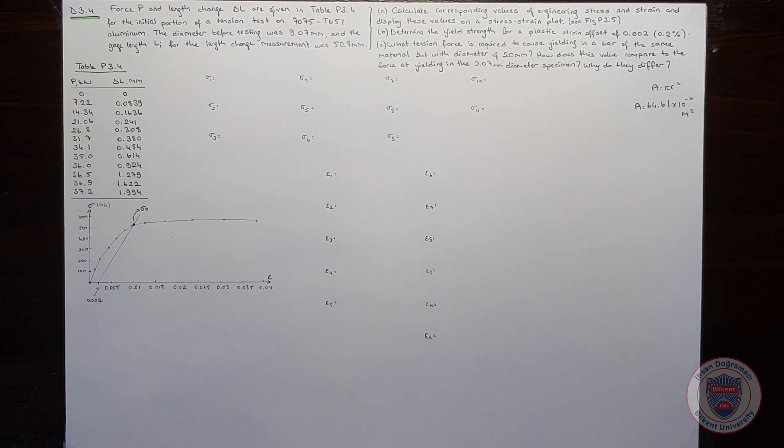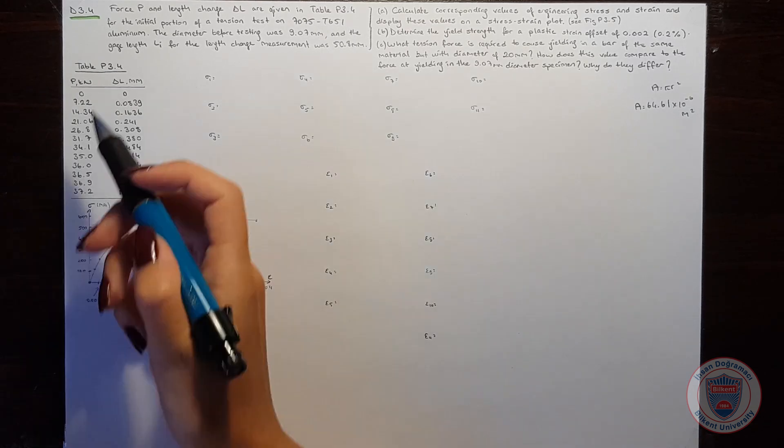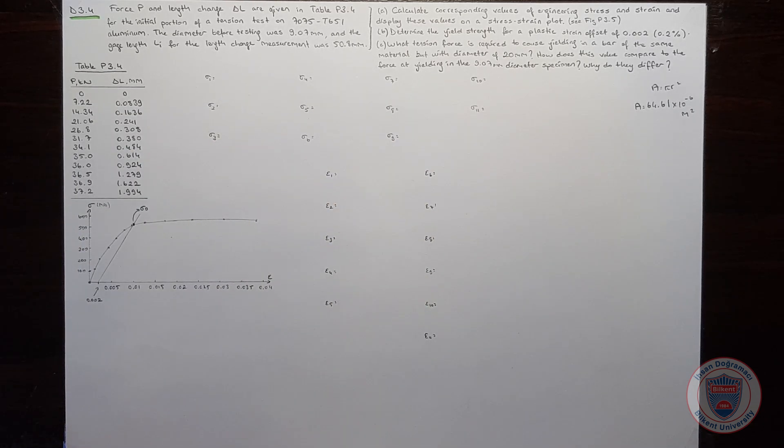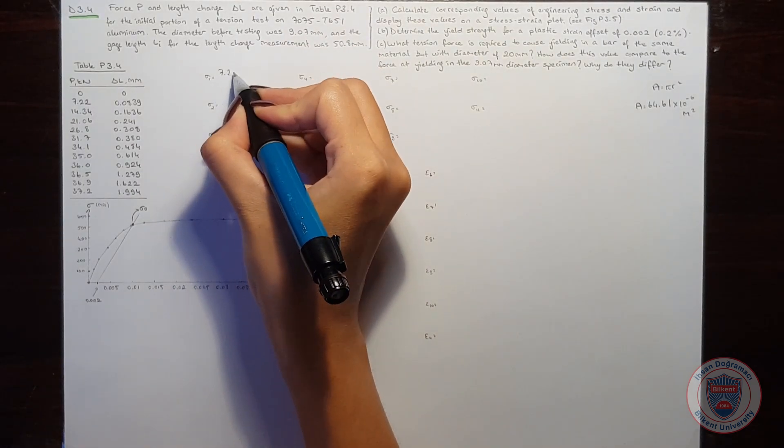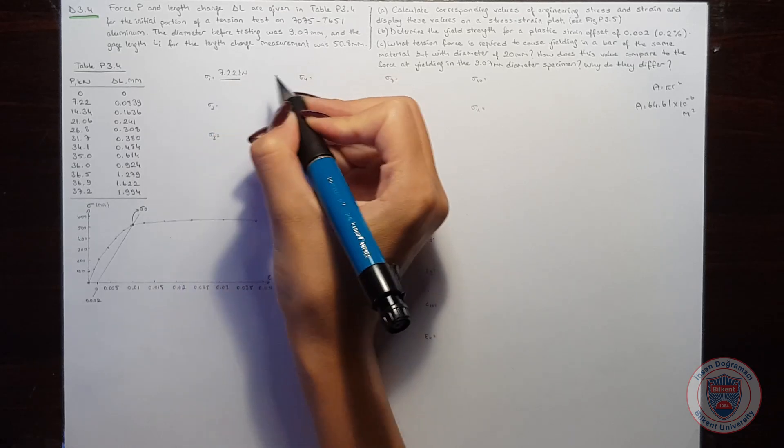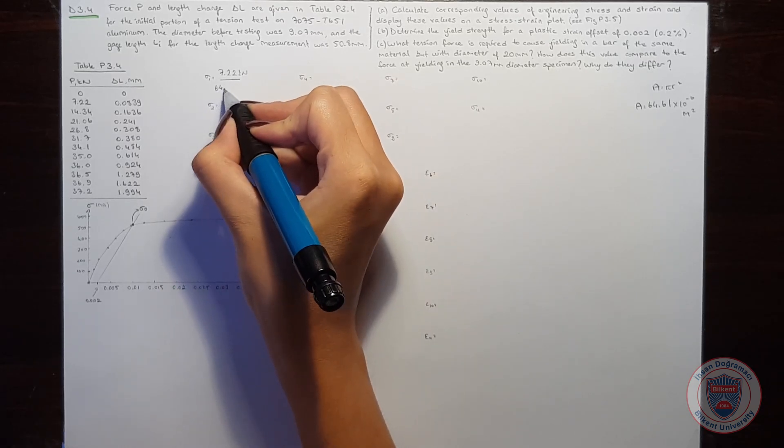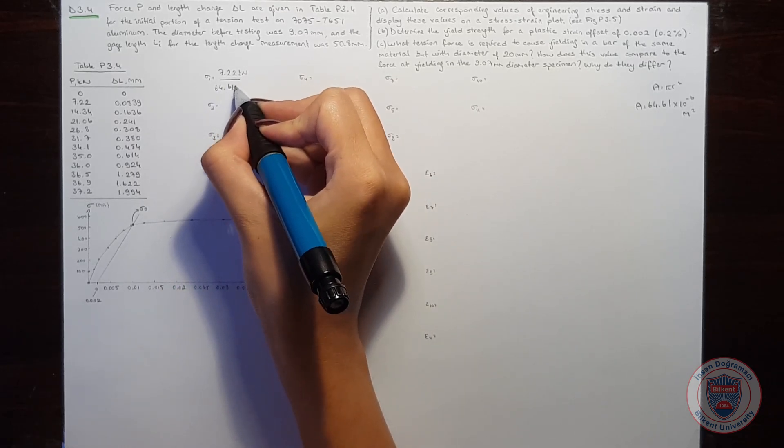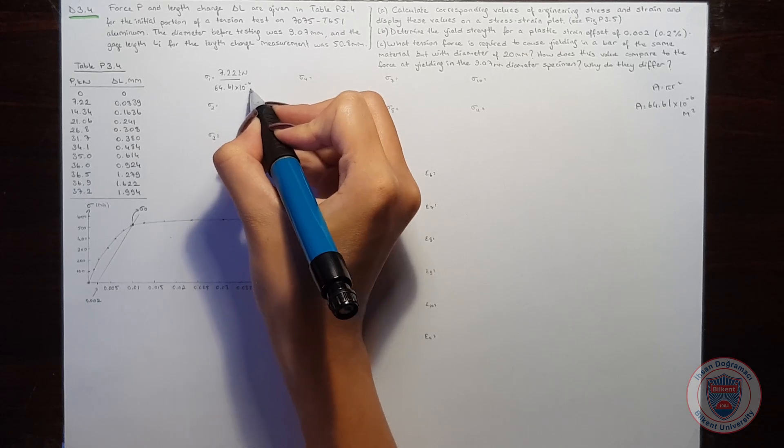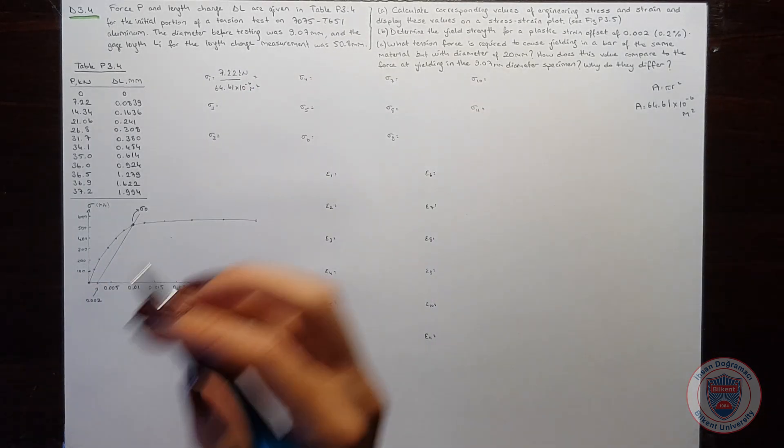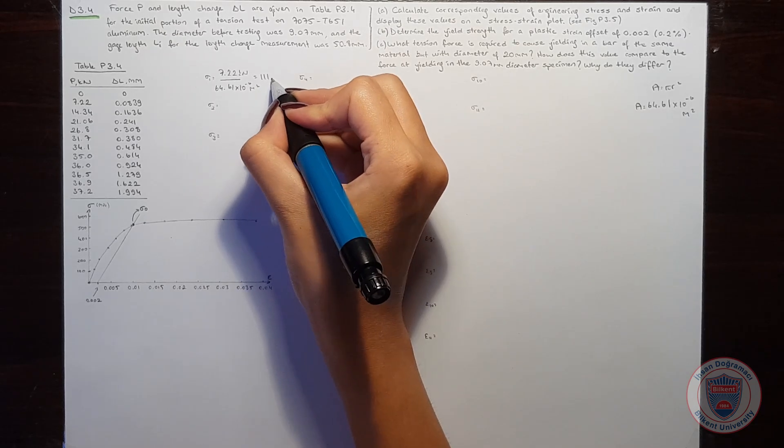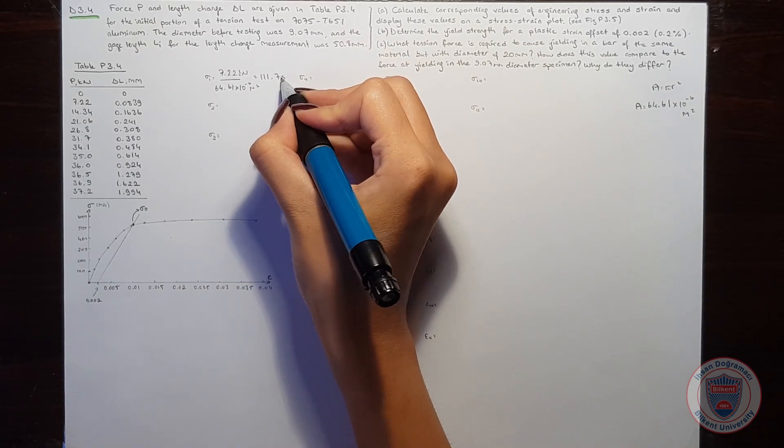We can start calculating the stresses now. We know that sigma 0 will be equal to 0 because the force is 0. But sigma 1 will be equal to 7.22 kilonewtons over the area which is 64.61 times 10 to the power of minus 6 meters squared. This will be 111.75 MPa.